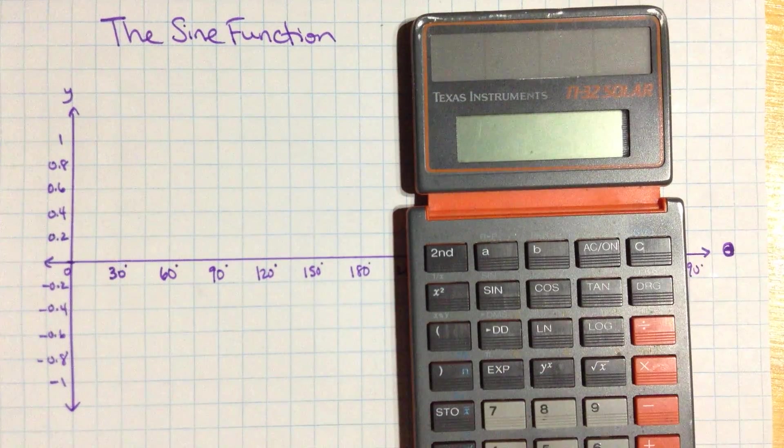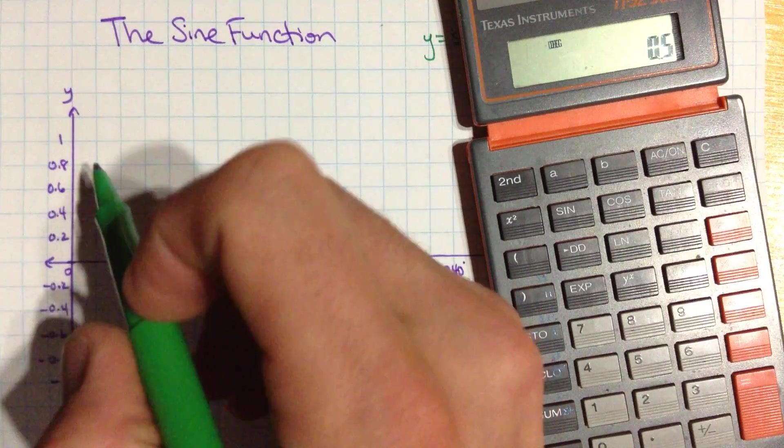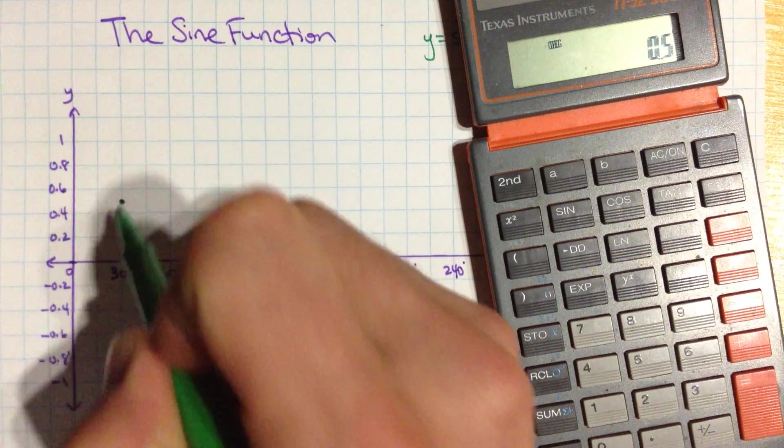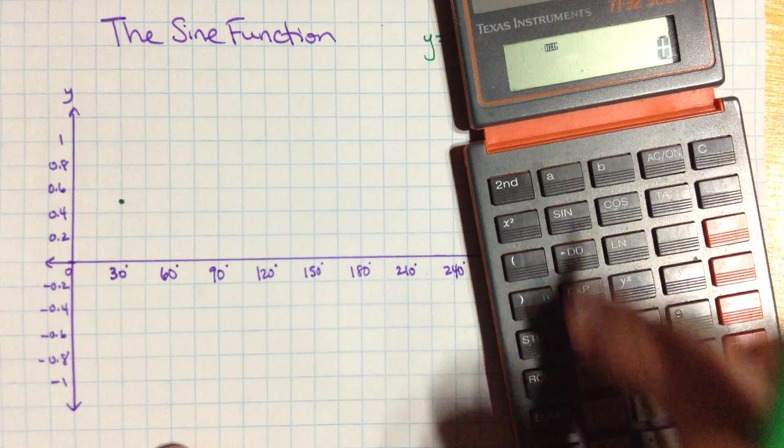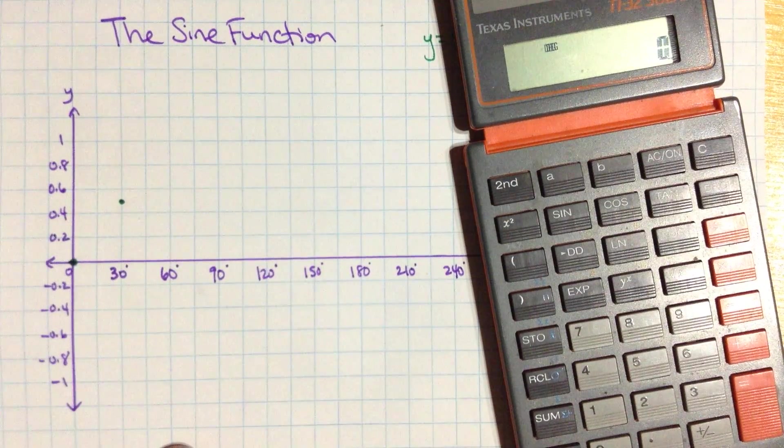So a bunch of them are kind of nice, like the number 30, 30 degrees, gives us a lovely point, 0.5. And I guess I should start off with just the sine of 0, which hopefully you already know is 0. So I'm going to plot these points on here.